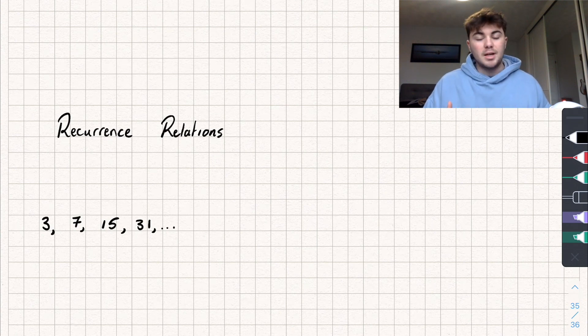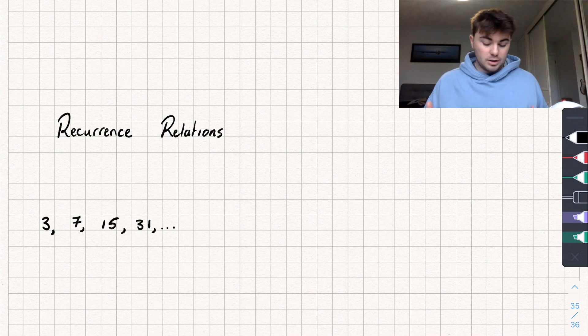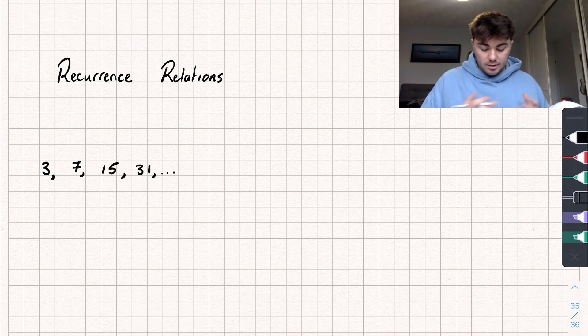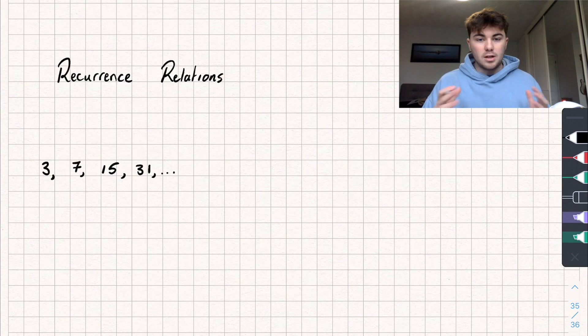So we'll start off with this pretty basic example and then I'll work through another example. You can see here we've got the sequence 3, 7, 15, and 31.